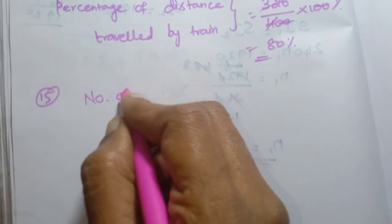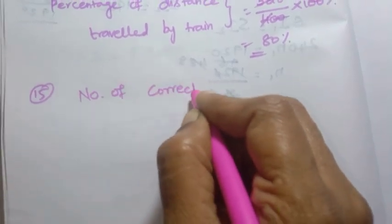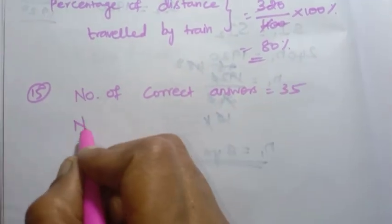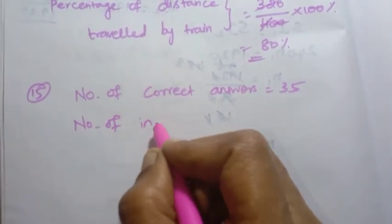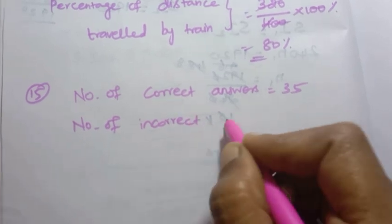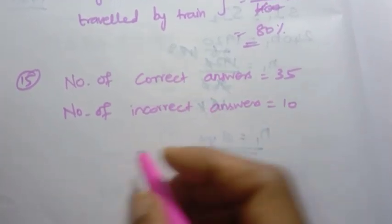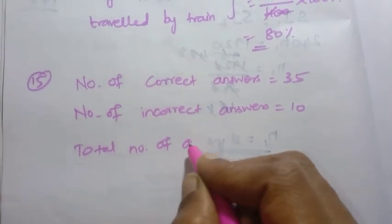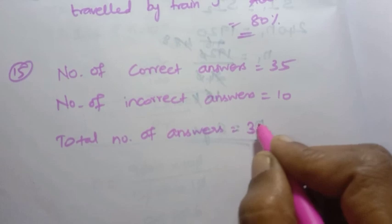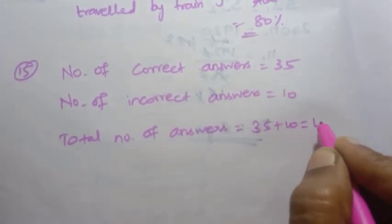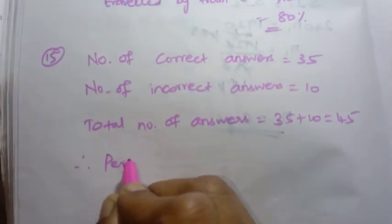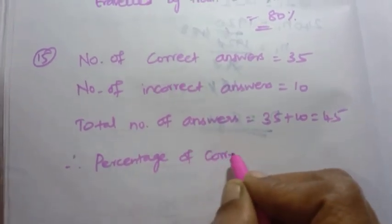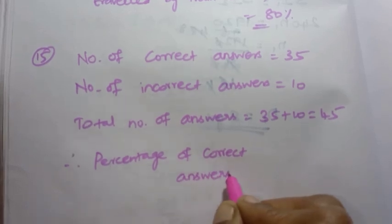Number of correct answers equals 35. Number of incorrect answers equals 10. So total number of answers = 35 plus 10 = 45. Therefore, percentage of correct answers = correct answers by total answers into 100 = 35 by 45 into 100.